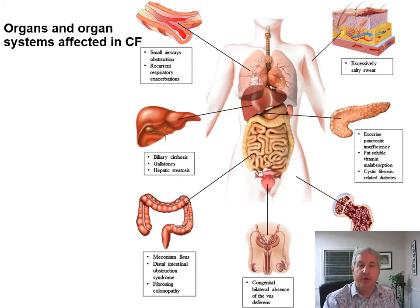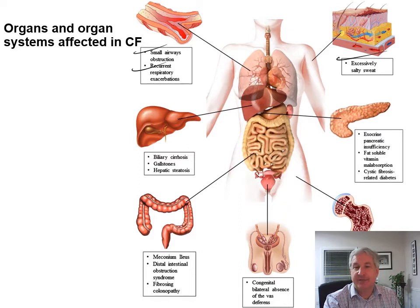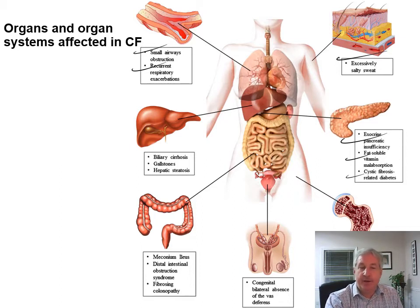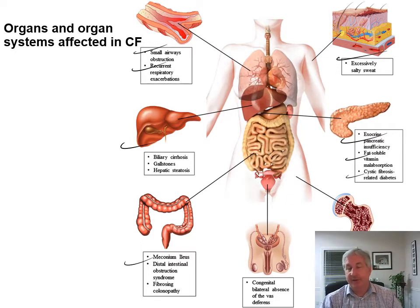Here's a cross section showing the thicker mucus layer in cystic fibrosis versus a healthy, thinner mucus layer and wider air passage on the left. Another slide shows the thicker mucus layer, and you can often have bacterial accumulation and infection in there. Small airways are obstructed, leading to recurrent respiratory infections, excessively salty sweat, pancreatic insufficiency, malabsorption of fat-soluble vitamins, CF-related diabetes, cirrhosis of the liver, gallstones, hepatic steatosis, meconium ileus, and severe constipation.